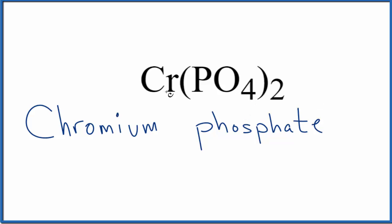So far, the name we have for Cr(PO4)2 is chromium phosphate. But we said chromium is a transition metal, so we need to write the charge between these two names for chromium.